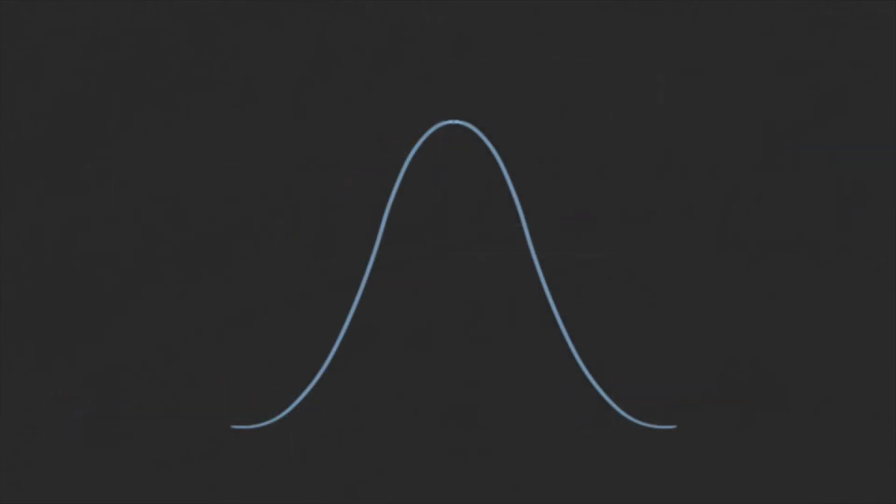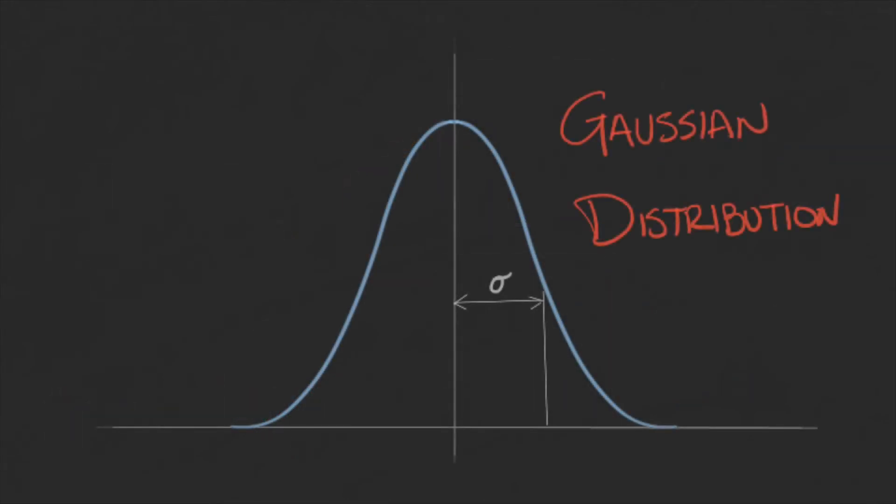The name comes from the fact that this kernel has the form of the probability density for a two-dimensional normal, or also called the Gaussian distribution.